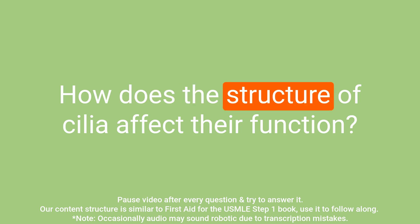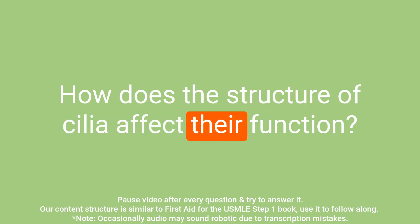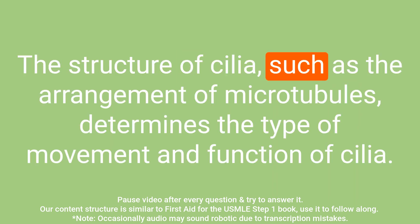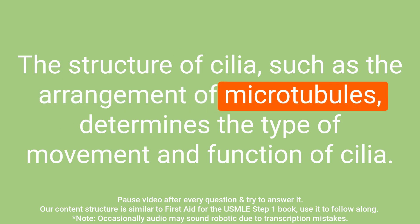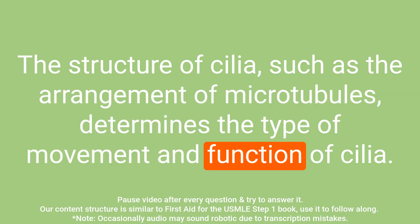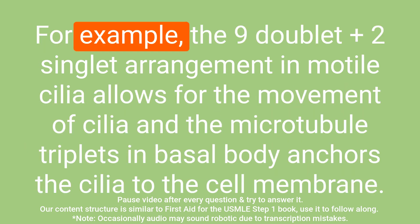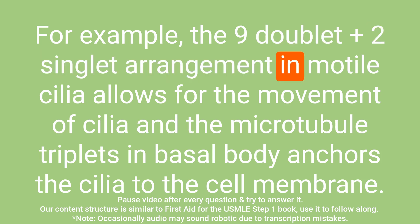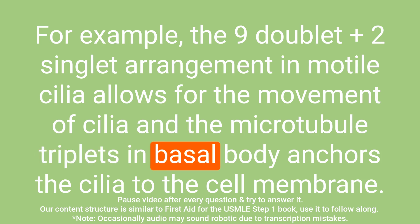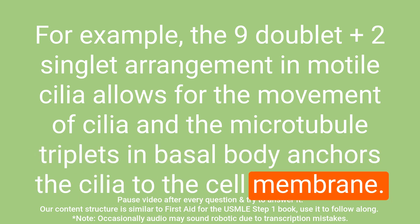Question: How does the structure of cilia affect their function? Answer: The structure of cilia, such as the arrangement of microtubules, determines the type of movement and function. For example, the nine doublet plus two singlet arrangement in motile cilia allows for movement, and the microtubule triplets in the basal body anchor the cilia to the cell membrane.